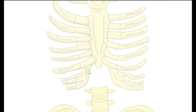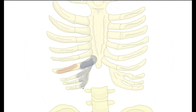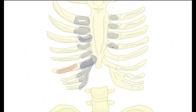Looking at the costal cartilage, this blue area between the rib bone and the sternum itself is what we call the costal cartilage, also referred to as the chondral cartilage, referring to the chondral region. This is the cartilage that bridges and connects the ribs to the sternum — the bones don't connect to the sternum directly; they attach through this costal cartilage.